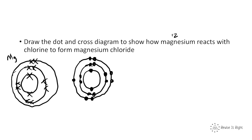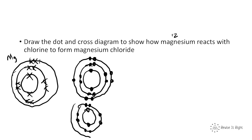Here we have an issue: magnesium has 2 electrons to give, but chlorine only needs one. That means we need another chlorine to take the second electron. So we draw a second chlorine with 17 electrons. Magnesium can give one electron to the first chlorine and the other electron to the second chlorine — one cross transferred to each.